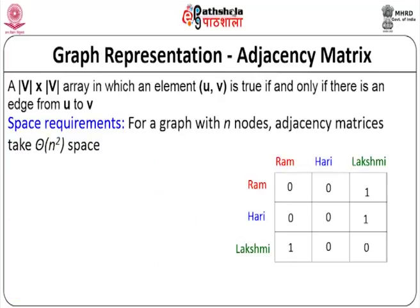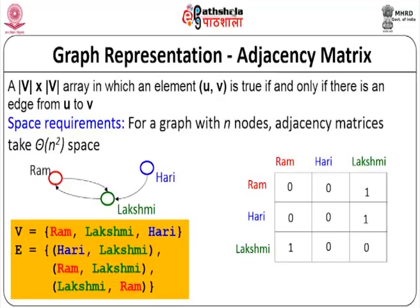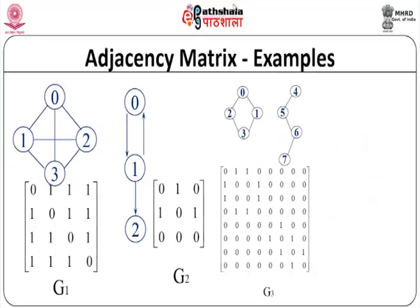A small example: with nodes Ram, Hari, and Lakshmi, you have a 3×3 matrix of 9 cells. There is an edge between Hari and Lakshmi, and between Ram and Lakshmi — so those positions are marked 1. For an undirected graph, all diagonal elements are 0 (no self-loops) and the matrix is symmetric. For a directed graph, diagonal elements are also 0 but the matrix is not symmetric.